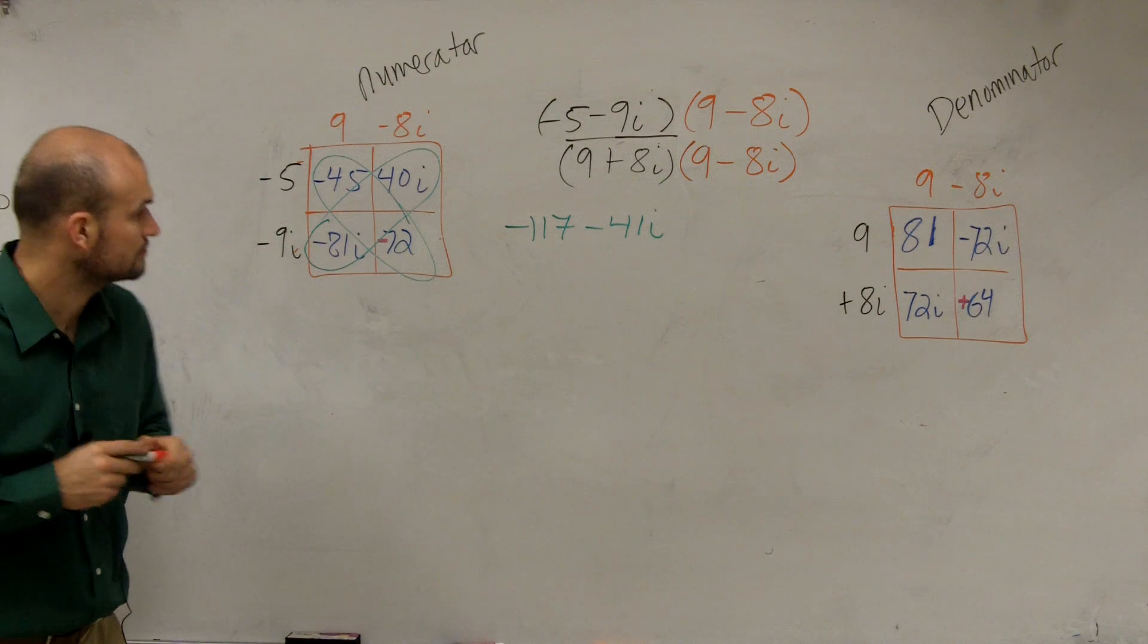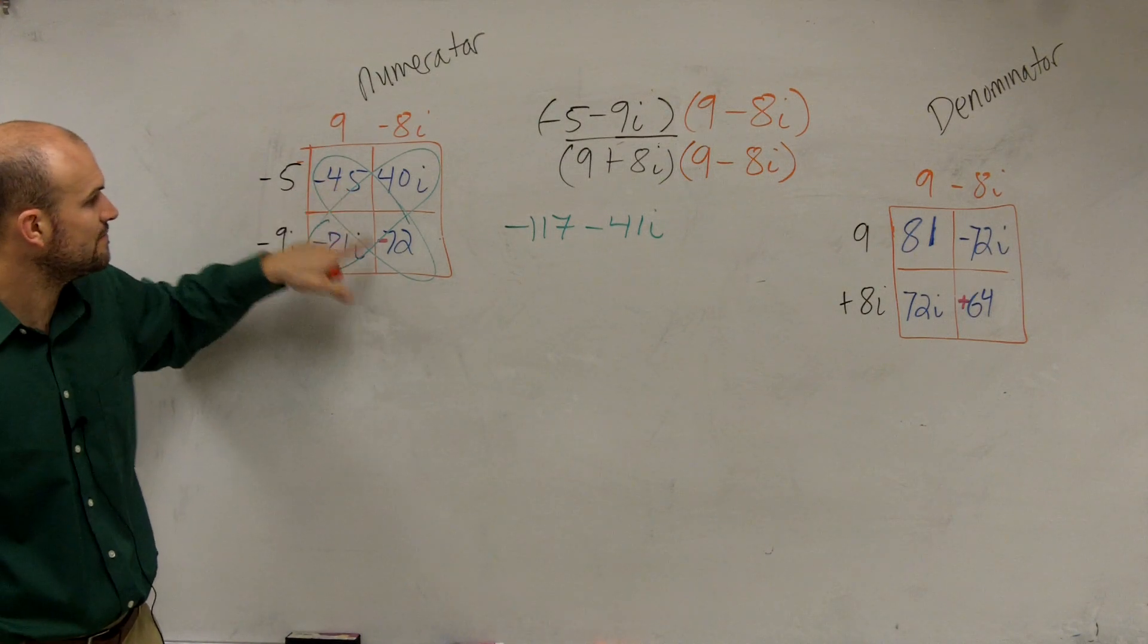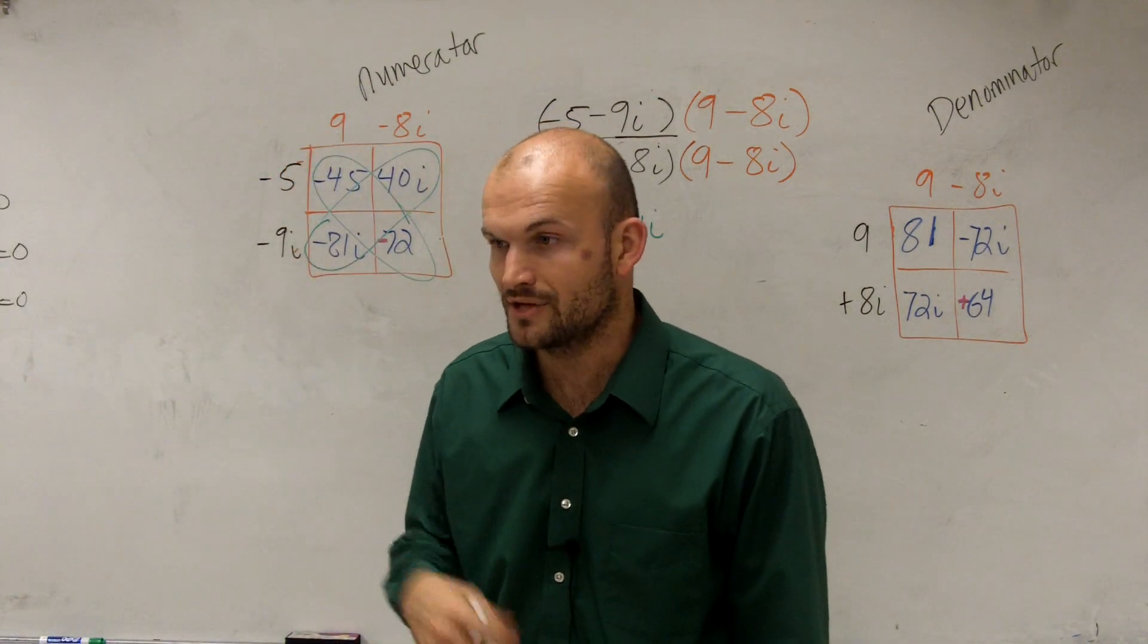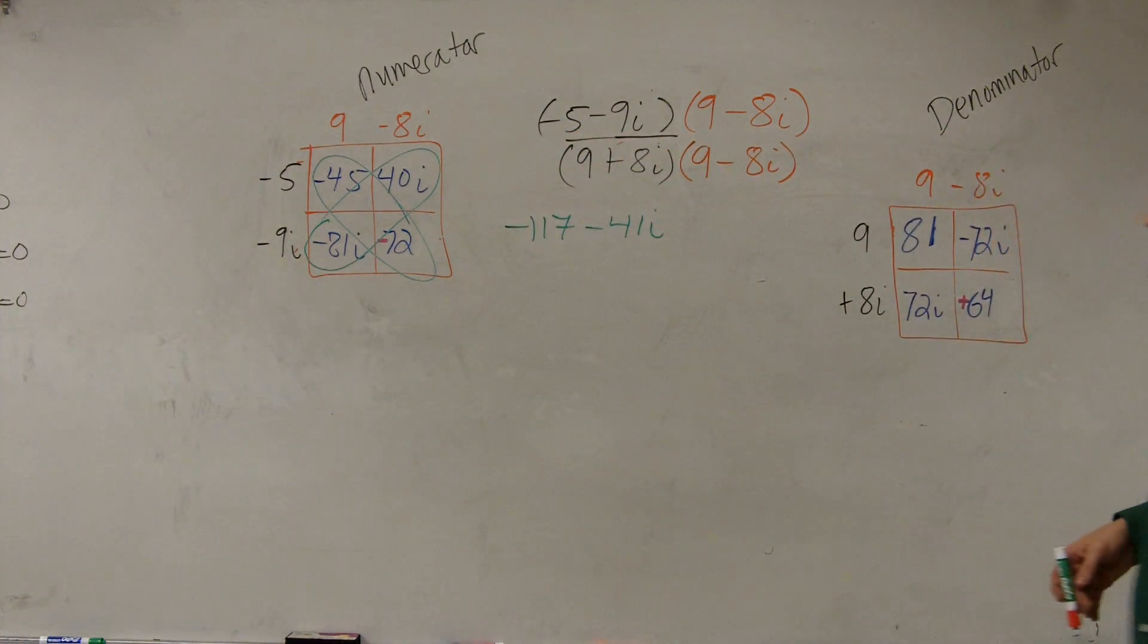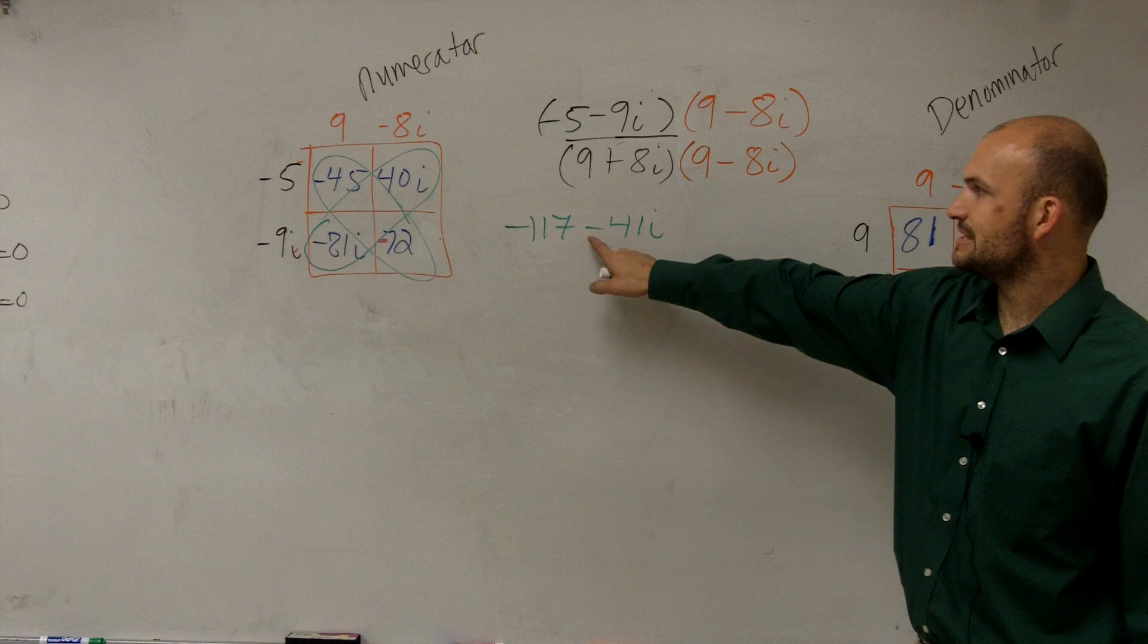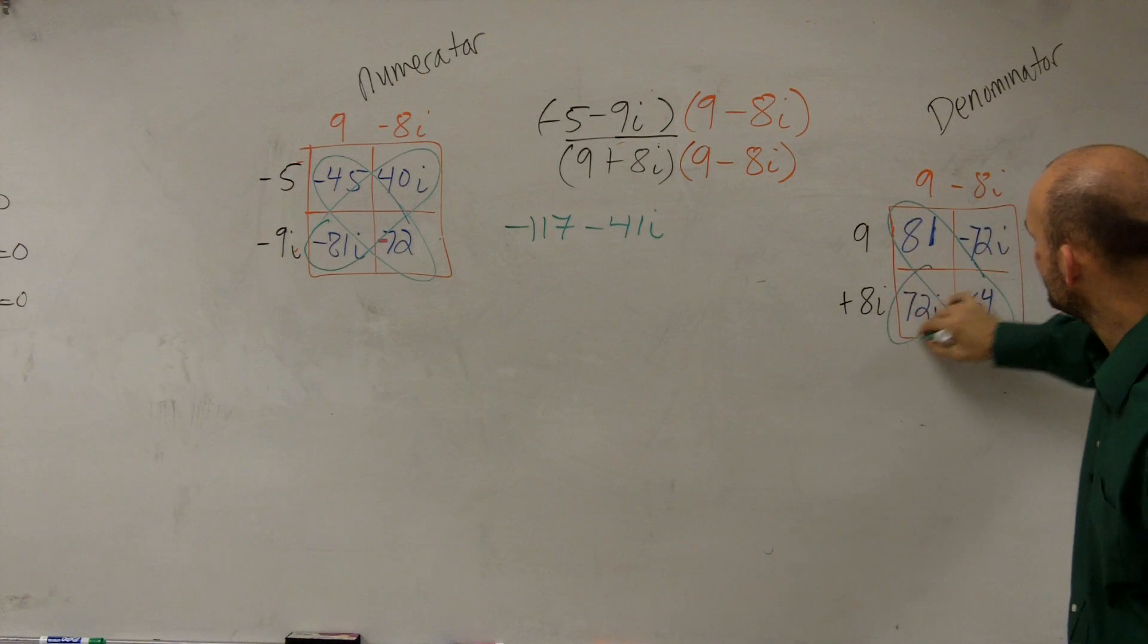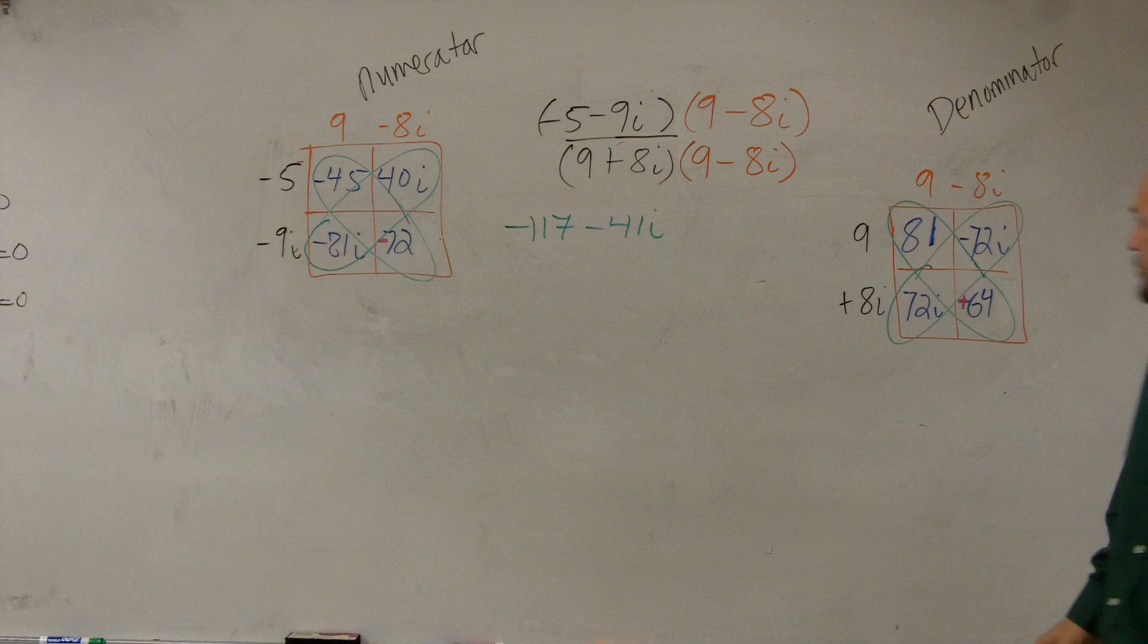I'm sorry? Why do you got a negative 65 minus 5? Well, check it in your calculator. Negative 45 minus 72. Think of it this way. If you owe me $45 and then you borrow 72 more dollars, now you're going to owe me 117. Does that kind of make sense? So we have 117 minus 41. And then over here, I can combine these two terms and then I can combine these two. Well, a negative 72i plus 72i, that goes to 0. And we're just left with 81 over 81 plus 64, which will be 145.